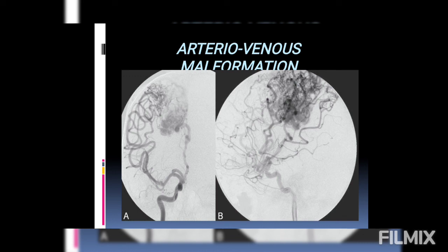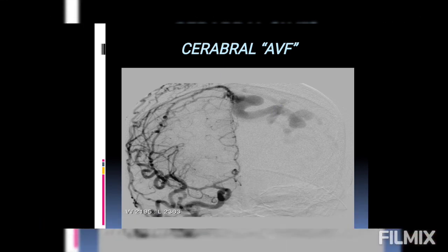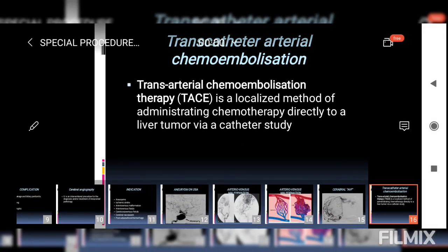Then we have AVM — arteriovenous malformation. On the left picture we can see normal anatomy with arteries, capillaries, and then veins. In AVM, arteries and veins communicate directly without capillaries, and you can see the enlarged veins as well — they will eventually burst. This last image shows cerebral AVF, or arteriovenous fistula.